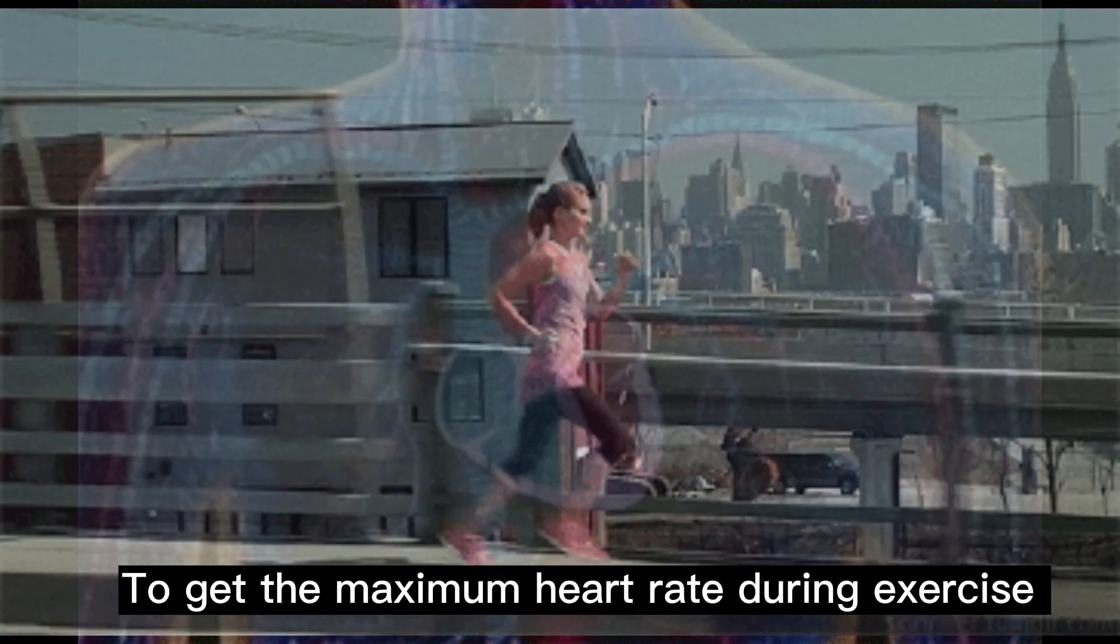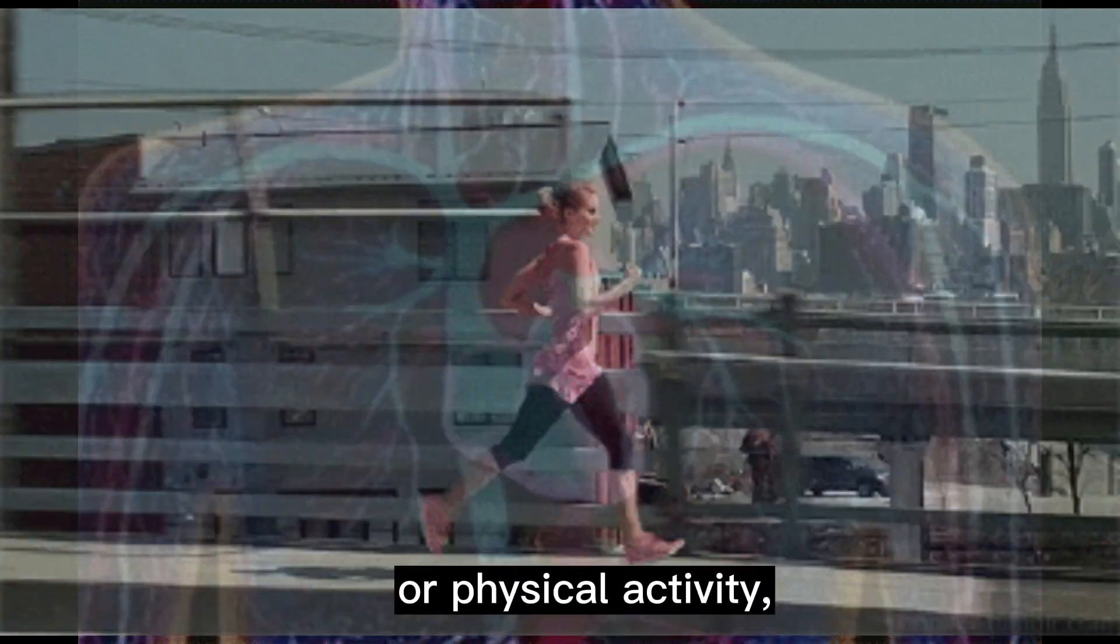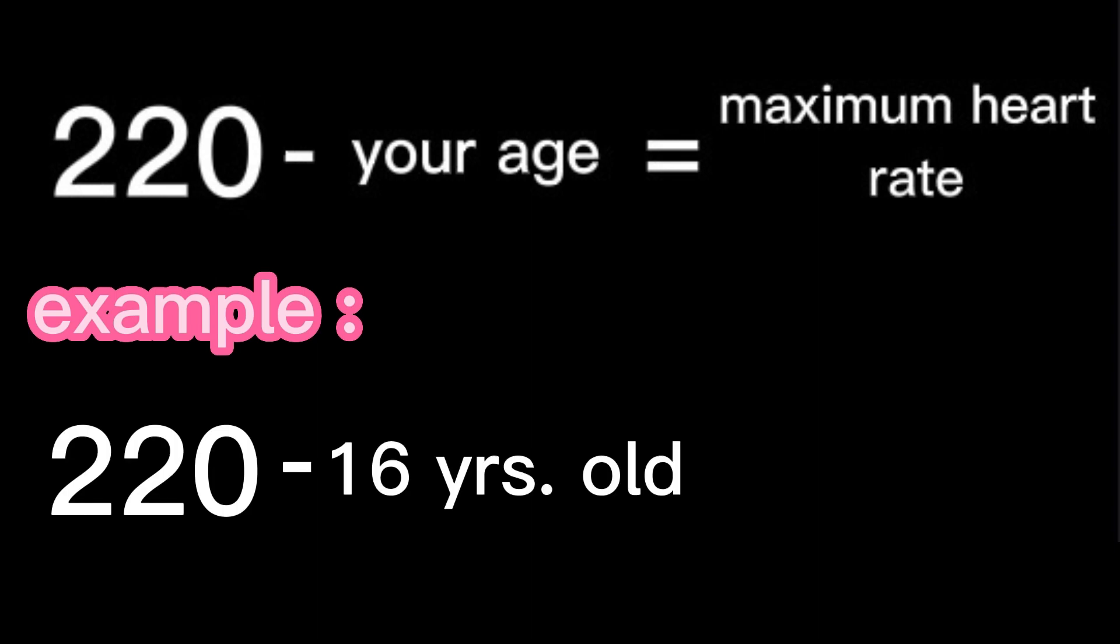To get the maximum heart rate during exercise or physical activity, take note of the formula: 220 minus your age equals maximum heart rate. For example, 220 minus 16 years old equals the maximum heart rate of 204.